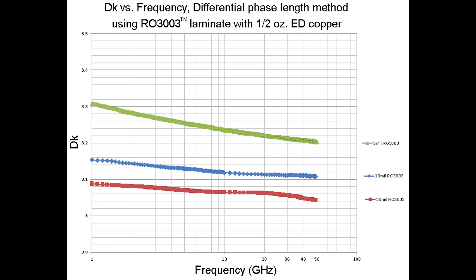The 10 mil thick circuit has a lower dielectric constant, and notice that it's flatter — the slope is more straight, which means there's less dispersion. Dispersion means dielectric constant changes with a change in frequency. The lower-loss material — which the thicker circuit effectively is, using the same material — will have a flatter curve or a less negative slope. You can see the 10 mil is much flatter and has less dispersion.